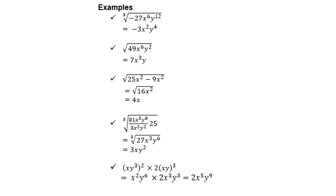For the cube root of 81x to the power 5 y to the power 8 over 3x squared y to the power 2, you must first simplify what's inside the bracket — please don't forget to simplify first. You will end up with 27x cubed y to the power 6, and then only do you find the cube root, which is 3xy squared.